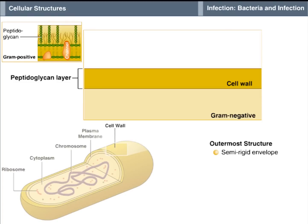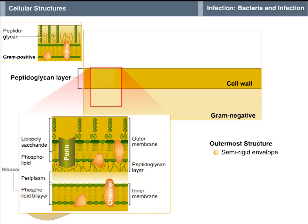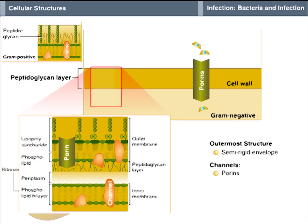But gram-negative bacteria have an additional membrane outside the peptidoglycan layer, called the outer membrane, which contains openings called channels, some of them formed by proteins called porins, which allow nutrients, waste products, and fluid to flow into and out of the cell.